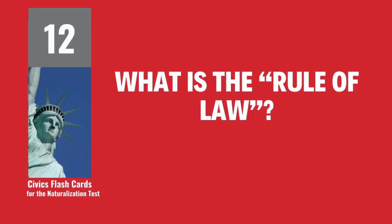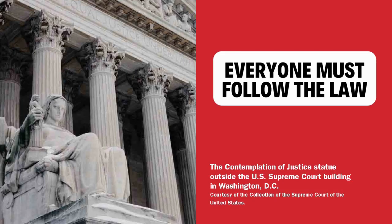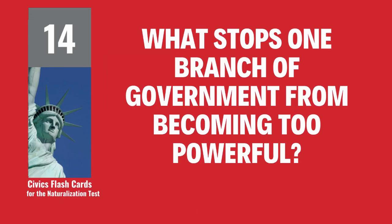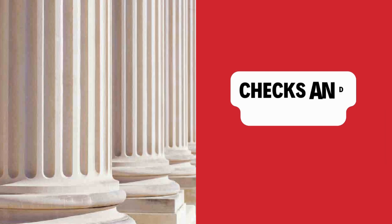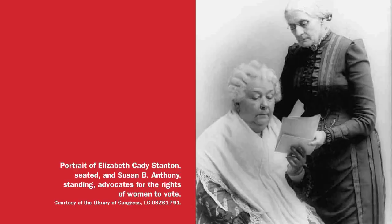What is the rule of law? Everyone must follow the law. What stops one branch of government from becoming too powerful? Checks and balances. How many amendments does the Constitution have? 27.